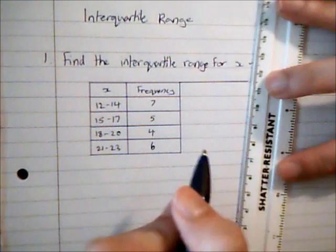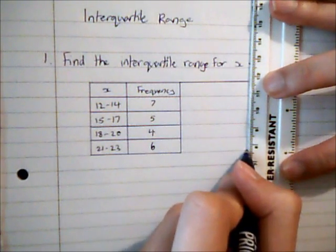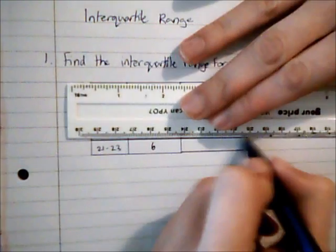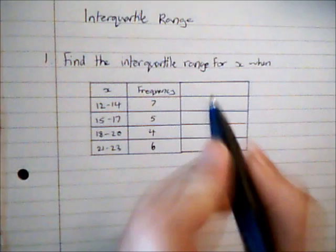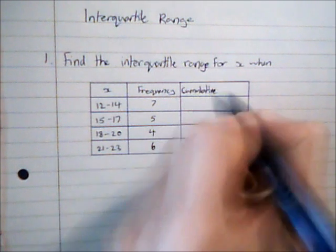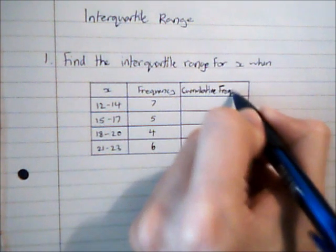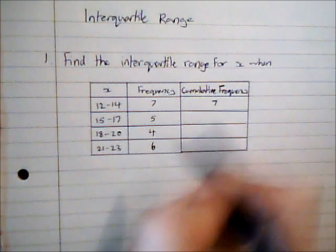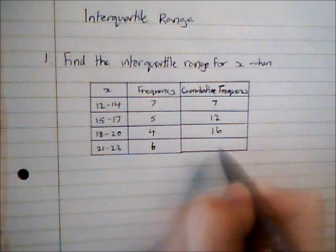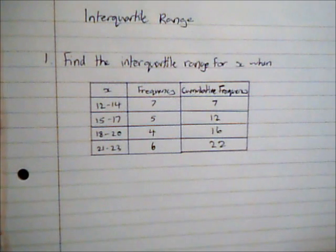So I'm going to add in an extra column, and this is going to be a cumulative frequency column. And I'm just going to complete that column by adding each new value in turn. And this is going to be useful because I'm going to use this to work out where the quartiles appear.